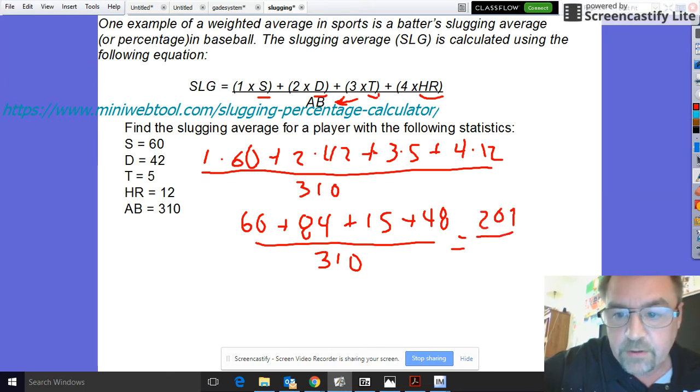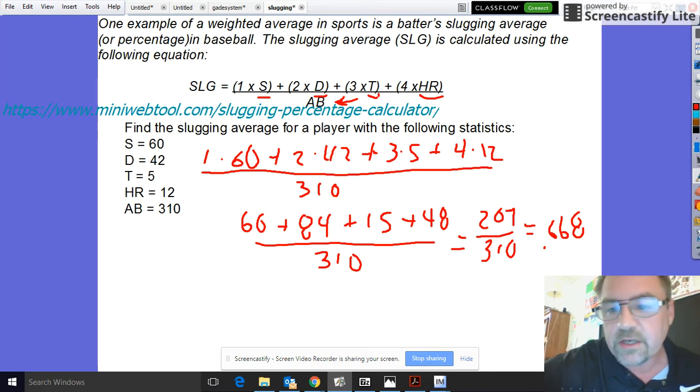The denominator is already added, you just divide by the denominator which is 310 and you should get approximately 0.668. Slugging averages are pretty much rounded to the nearest thousandth.